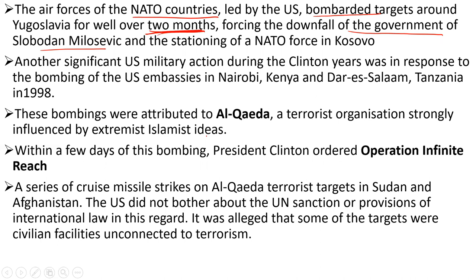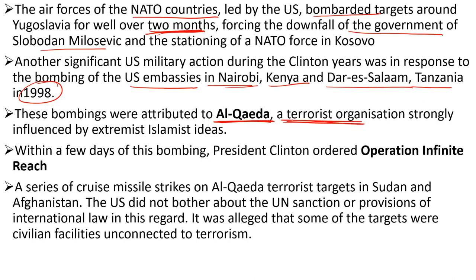During the Clinton years, there were two important incidents. The first is the response to the bombing of US embassies. The Al-Qaeda terrorist group bombed US embassies in Nairobi, Kenya, and Dar es Salaam, Tanzania in 1998. Clinton gave the US military response. These bombings were attributed to Al-Qaeda, a terrorist organization.